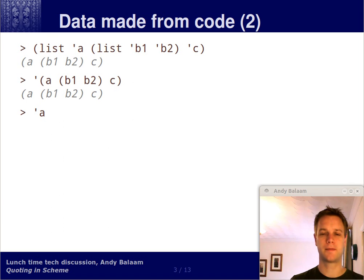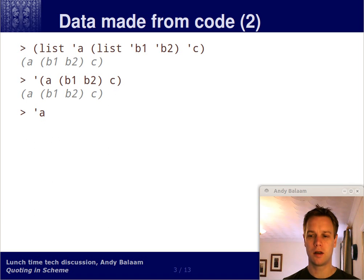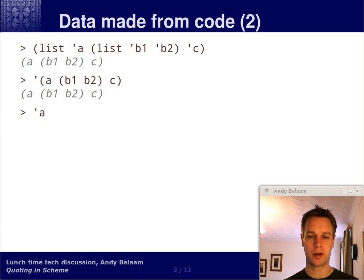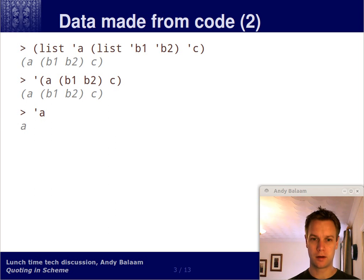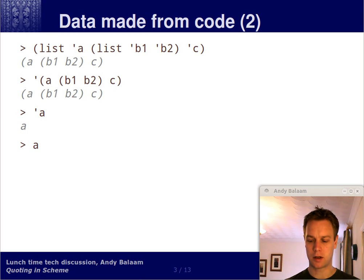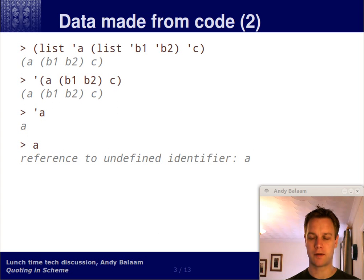By quoting, you basically say to the interpreter: don't do anything with this stuff yet, just hang on to it. So to clarify how this works: quote A would just store the symbol A - the interpreter doesn't look up A or anything like that. But when we ask for A itself, the answer is that it's undefined. We haven't defined it. So we're able to quote something even though it's not yet defined.